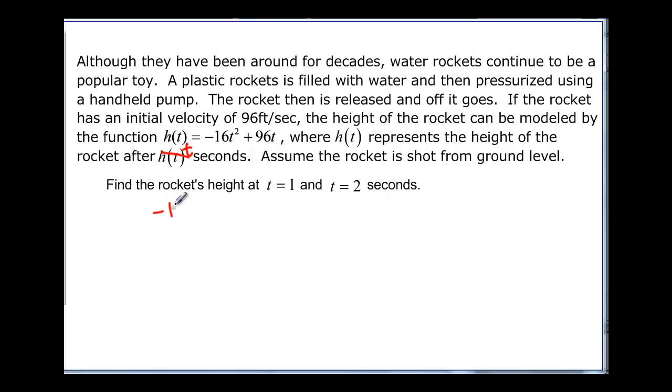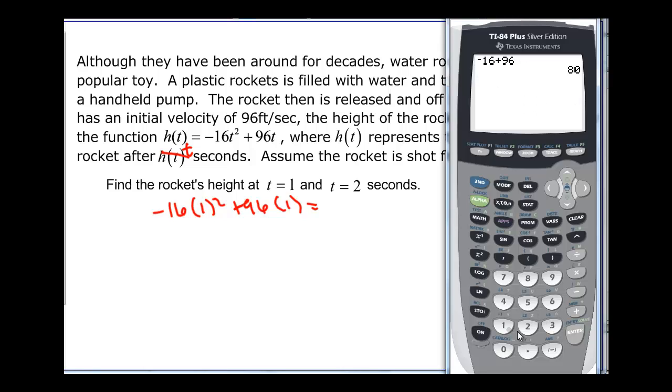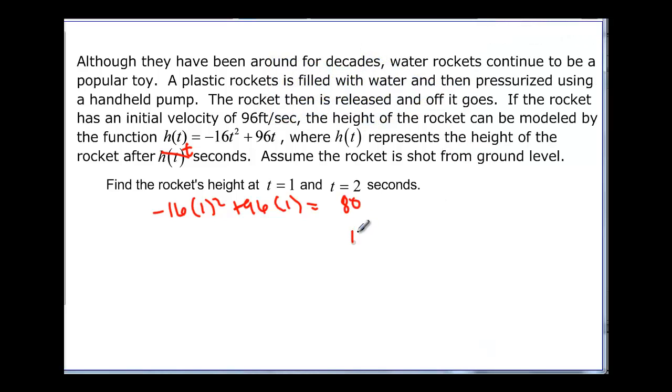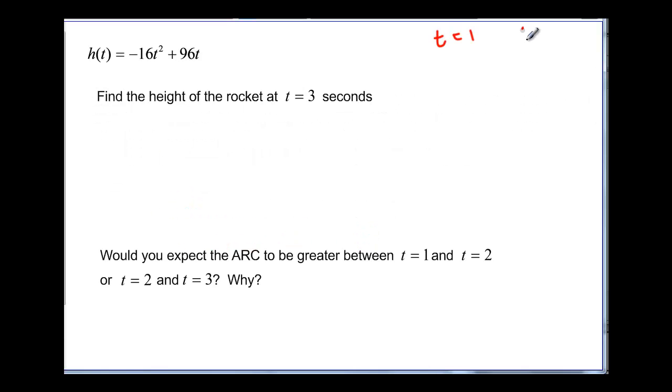So when it's negative 16 times 1 squared plus 96 times 1, then we are going to have 80. And if I do negative 16 times 2 squared plus 96 times 2, I get 128. So this is 80, and it was 128 when I put in 2. We may need those numbers, 80 and 128, remember those. Let's do t equals 1, then it was 80, so that we don't forget later. And t equals 2 was 128. And then if we do negative 16 times 3 squared plus 96 times 3, we get 144.